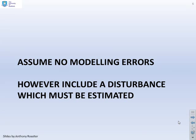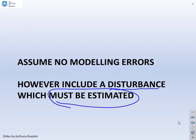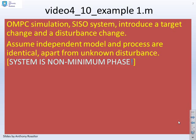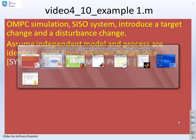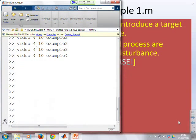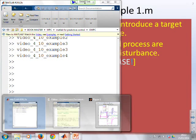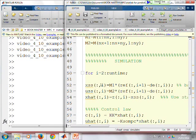Let's give some examples. We're going to assume no modelling errors — that is, assume the A, B, C matrices are known exactly — but we are going to include a non-zero disturbance, and the key thing here is that disturbance must be estimated. We're given no information about it and we're going to use the block diagram shown for that estimate. We'll start with video 4.10, example 1. The simulation file is chapter 4 OMPC simulate C.